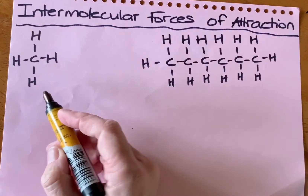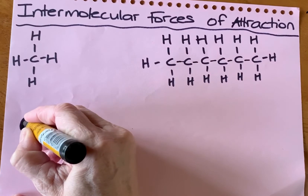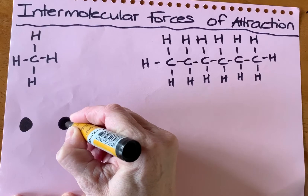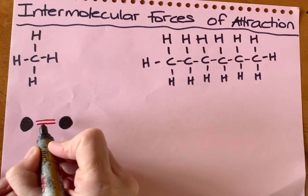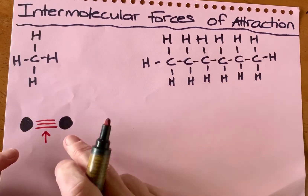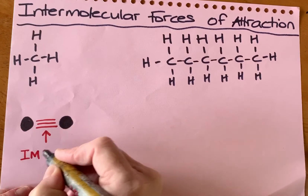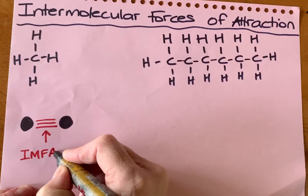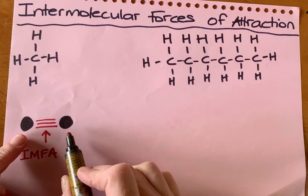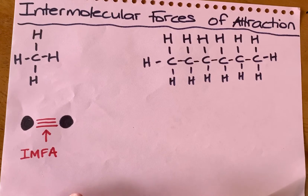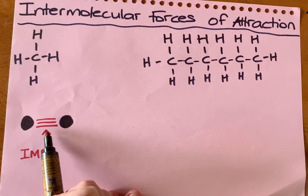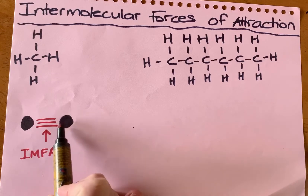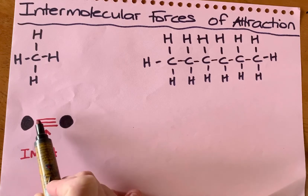If I represent two methane molecules as two dots, what I'm actually talking about is the force of attraction between two molecules — that's what I mean by intermolecular force of attraction. When you're looking at a boiling point, you're looking at a change of state between a liquid and a gas, and it's these intermolecular forces of attraction which break at the point where the phase change happens.